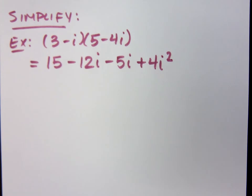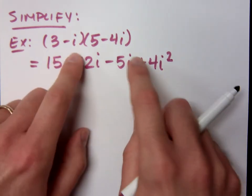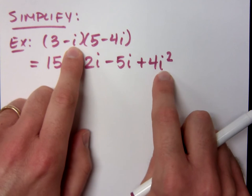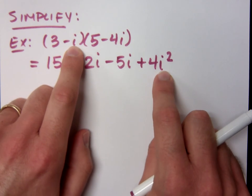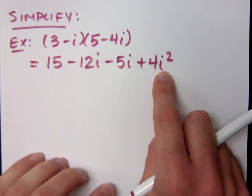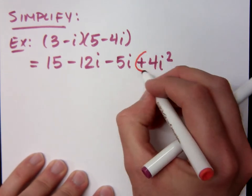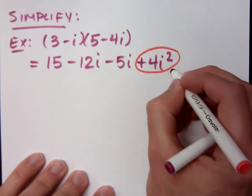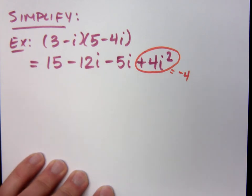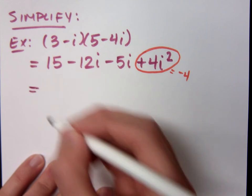Now this is where I saw a lot of students having trouble. i times i will give you the i squared, just like x times x is x squared. Then you have to combine like terms, but what happens to this guy right here with the i squared? It becomes a negative 4. Convert things appropriately. Combine like terms and what do we have?